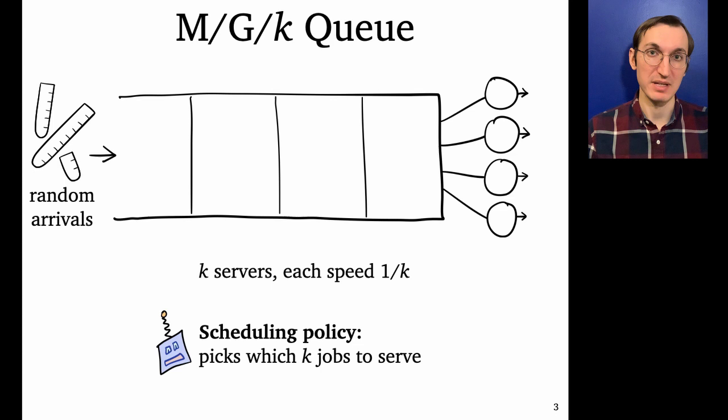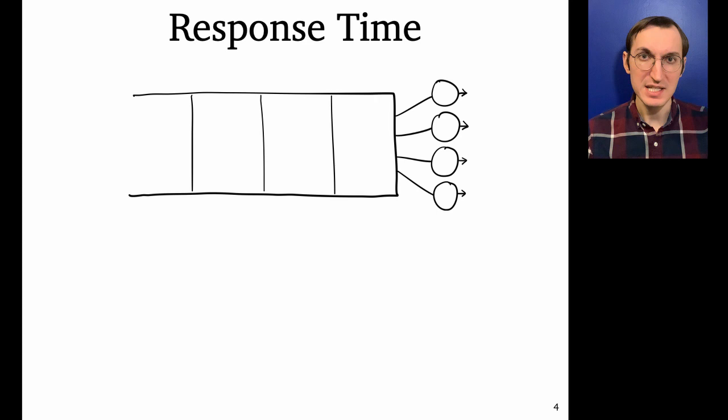So in the M/G/k, the main difference in scheduling is that now we get to choose up to k jobs to be in service. So we're trying to optimally schedule in the M/G/k. The metric we're interested in is called response time.